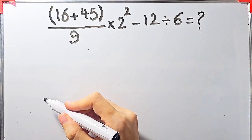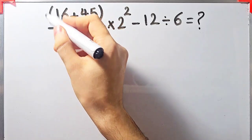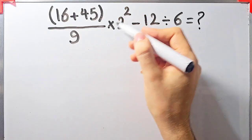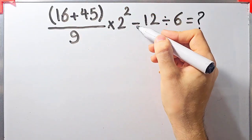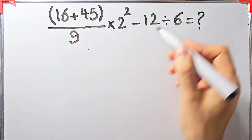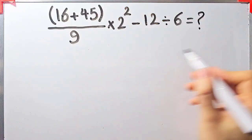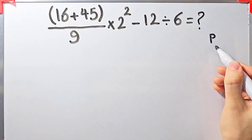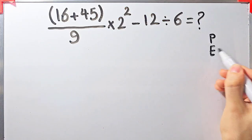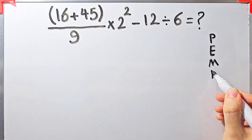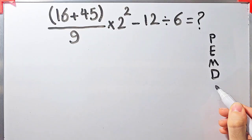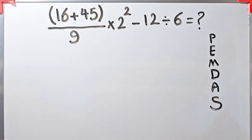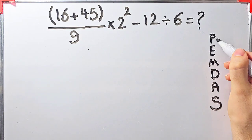Hi friends and welcome to Turbo Math channel. In this question we have parenthesis, addition, multiplication, exponents, subtraction, and division. To solve this question we need to follow the order of operations, which is PEMDAS. PEMDAS shows the priority of the mathematical operations, and if you don't pay attention to this rule you get the wrong answer.